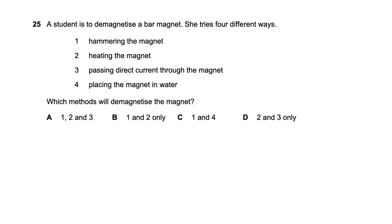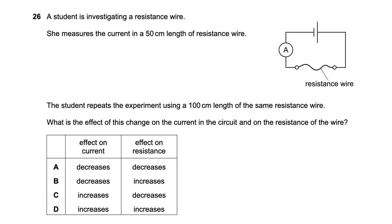Question twenty-five: a student tries four ways to demagnetize a bar magnet. Passing direct current through the magnet will induce a magnetic field, not demagnetize it — so method three is wrong. Placing the magnet in water does not affect its magnetism — method four is wrong. Hammering the magnet and heating the magnet will both demagnetize it. So methods one and two — option B — is the right answer.